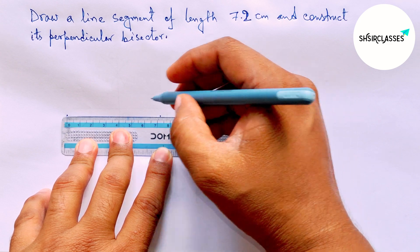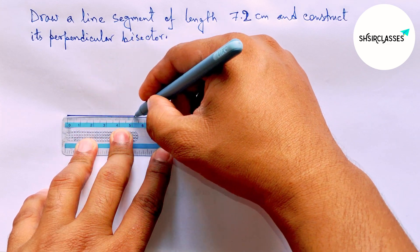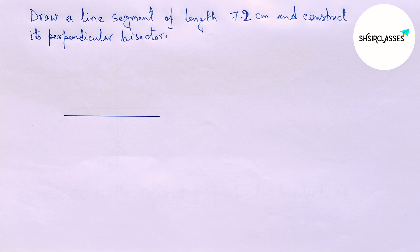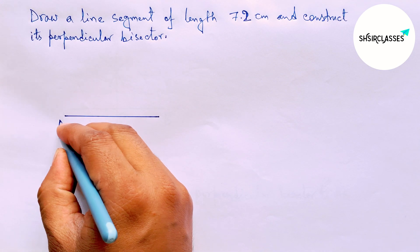Measuring here, this is 7 and counting 2, so 7.2 centimeters. This is a 7.2 centimeter line segment, labeling here A and B.